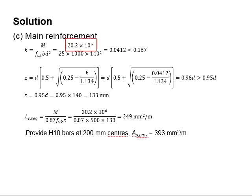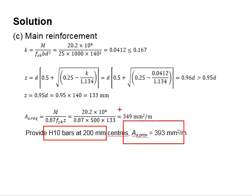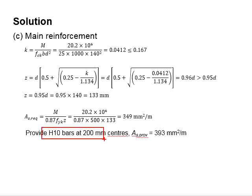Substitute the moment and substitute the z into this equation. You will be obtaining the As required. You need to provide reinforcement bar so that your As provided is greater than the As required. In this case, we provide H10 at 200 mm center to center spacing.